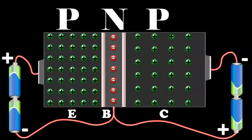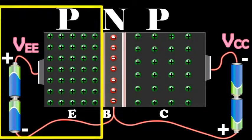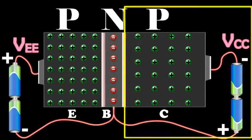The external biasing of the junctions is provided by the batteries VEE and VCC as shown in the diagram. The emitter-base junction is forward biased and the collector-base junction is reverse biased.